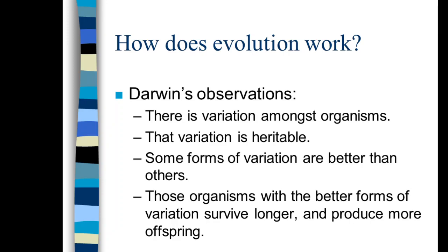Nobody understood how evolution worked. Interestingly, there was somebody alive at the same time as Charles Darwin — a monk working as a botanist, Gregor Mendel — who had essentially figured out many key ideas Darwin would have benefited from: namely, how information gets from one generation to the next. Nobody at the time had a concept of genes, alleles, or DNA. Darwin and Mendel never met and never knew of each other's work.